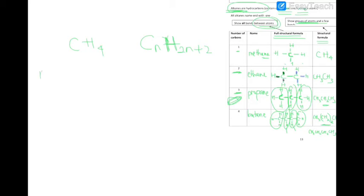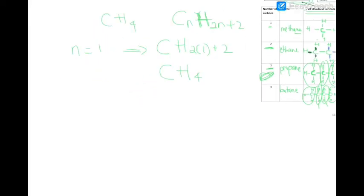So in this case, n is equal to 1. Therefore, you end up with CH2 times 1 plus 2. Do the math. So 2 times 1, 2 plus 2, 4. So that's the first member.